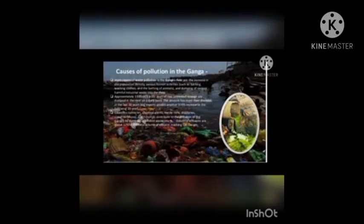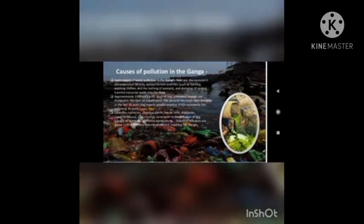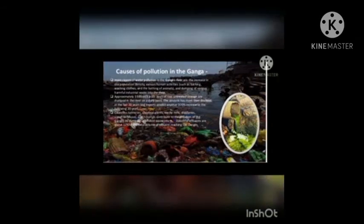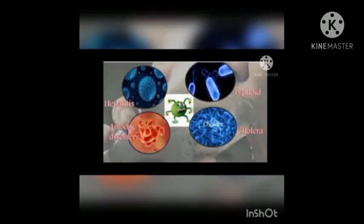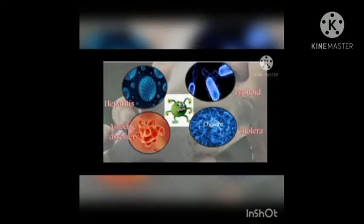Causes of pollution in Ganga. The main cause of water pollution in the Ganga river is that approximately 3 billion liters of raw untreated sewage are dumped in the river on a daily basis, and the amount has more than doubled in the last 20 years. Many bacteria are found in the river causing hepatitis, typhoid, cholera, etc.